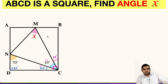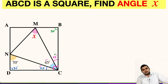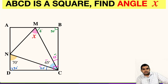Moving ahead, let us focus on triangle MBC. Angle B will be 90 degrees because ABCD is a square. This angle is 90 and the other we have found is 25 degrees. So the remaining angle will be 180 minus the sum of these two: 180 minus 90 is 90, and 90 minus 25 will be 65 degrees.